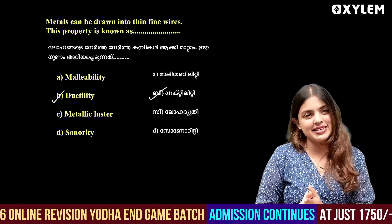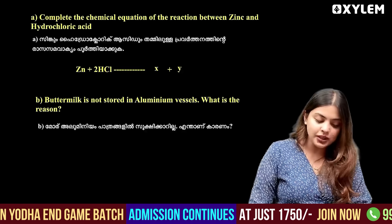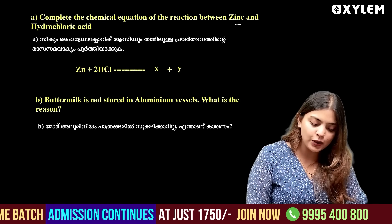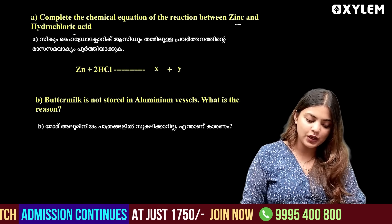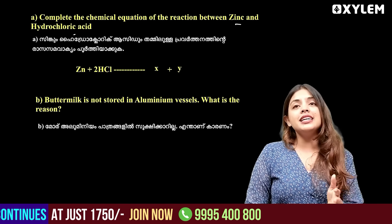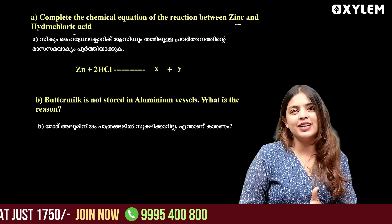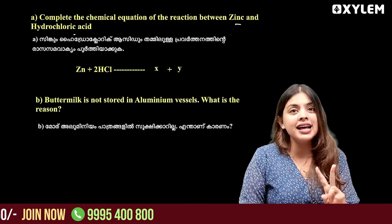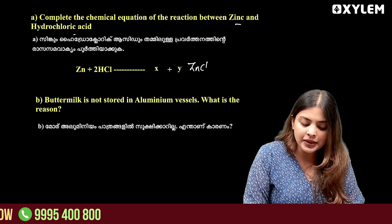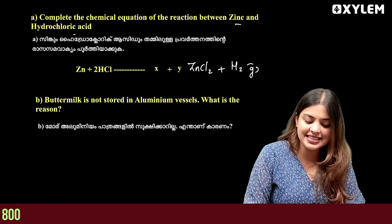Gold and platinum show ductility. If you use hydrochloric acid and react with a metal, the products are zinc chloride and hydrogen gas.